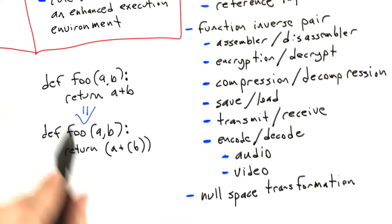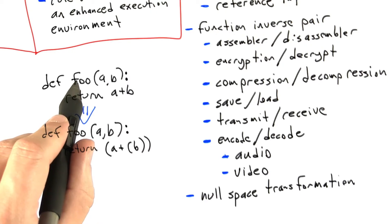And one possible null space transformation on this would be to add a level of parentheses, or maybe several. Now this is a null space transformation because we've transformed the test case, possibly in a non-trivial way, although here we've done something pretty trivial. But we've transformed it in such a way that we know that the meaning of the test case shouldn't have changed.